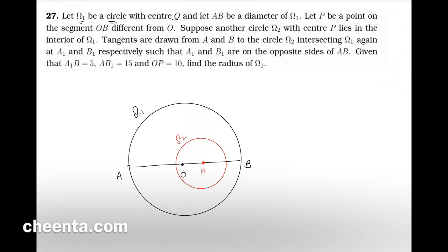Now we draw tangents from A and B to this red circle omega2. Starting from A, we draw a tangent to the point of tangency A1, and similarly from B we draw a tangent to point B1. The green lines are the tangents, and notice that A1 and B1 are on opposite sides of AB.